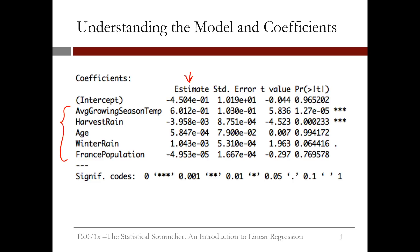The standard error gives a measure of how much the coefficient is likely to vary from the estimate value. The t value is the estimate divided by the standard error. It will be negative if the estimate is negative, and positive if the estimate is positive. The larger the absolute value of the t statistic, the more likely the coefficient is to be significant, so we want variables with a large absolute value in this column.